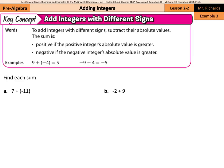Our second key concept is to add integers with different signs — one positive, one negative. To add integers with different signs, subtract their absolute values. The sum is positive if the positive integer's absolute value is greater, and negative if the negative integer's absolute value is greater.